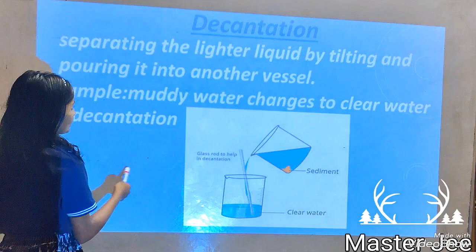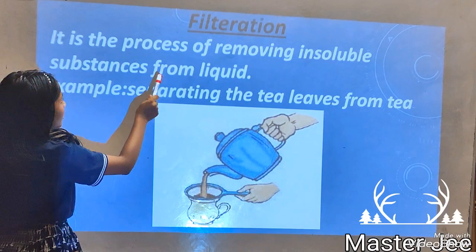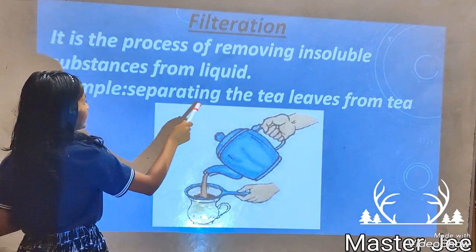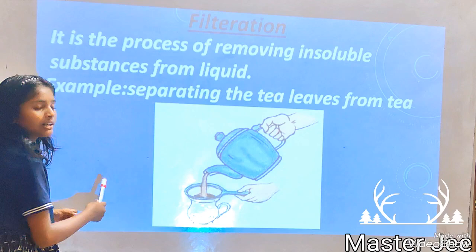Filtration. Filtration is a process of removing insoluble substances from a liquid. For example, separating the tea leaves from the tea. Here we can see we are separating the tea leaves from the tea.